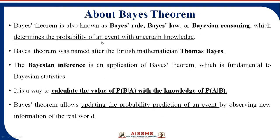Now about Bayes' theorem. Bayes' theorem is also known as Bayes' rule, Bayes' law, or Bayesian reasoning. Bayes' theorem determines the probability of an event with uncertain knowledge. It was named after the British mathematician Thomas Bayes. Bayes' theorem calculates the probability of B given A, using knowledge of the probability of A given B — that is, if A already occurred, what are the chances of B, and vice versa.